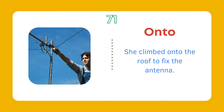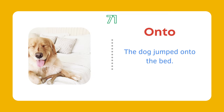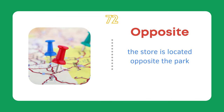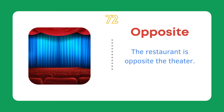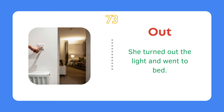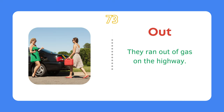Onto. She climbed onto the roof to fix the antenna. The dog jumped onto the bed. Opposite. The store is located opposite the park. The restaurant is opposite the theater. Out. She turned out the light and went to bed. They ran out of gas on the highway.